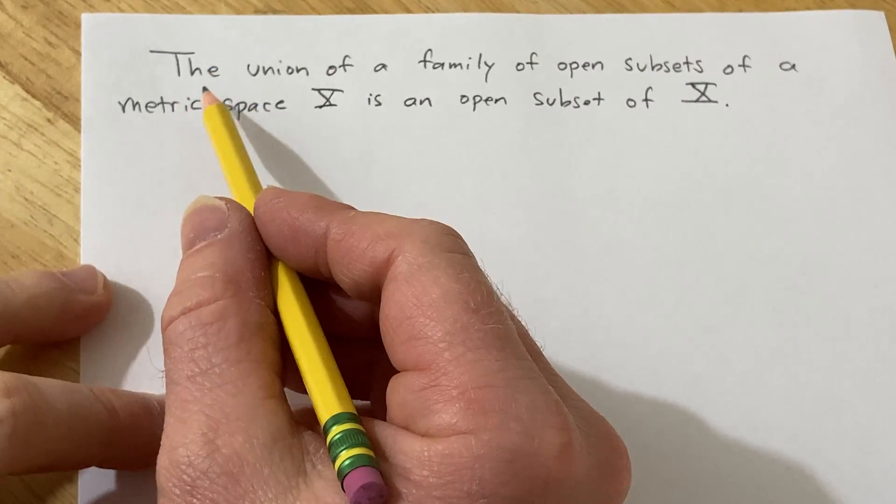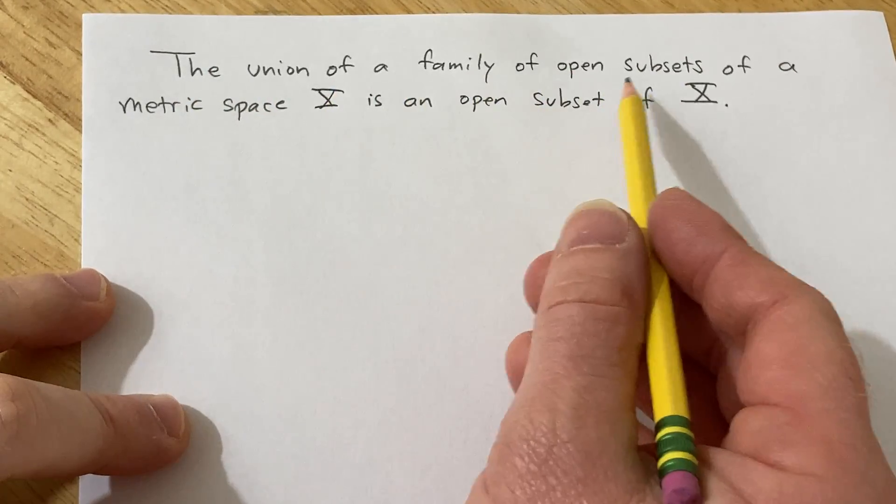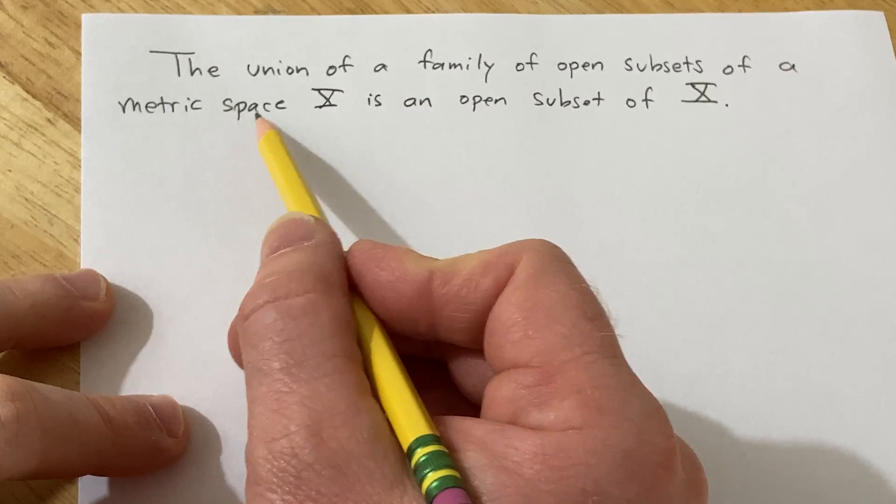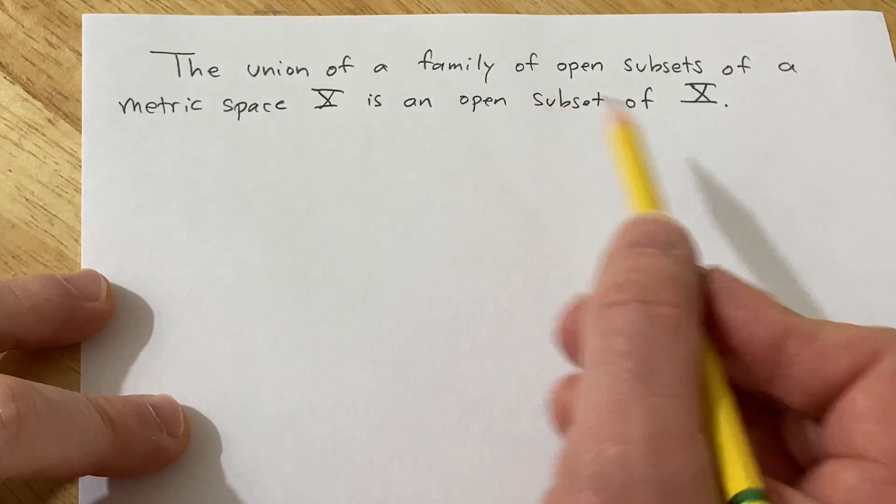Hello, in this video we're going to do a proof. The union of a family of open subsets of a metric space X is an open subset of X.